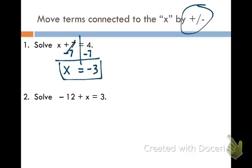If I were to plug negative three back into the original equation right here for x, I would get negative three plus seven equals four. And that's a true statement. Negative three plus seven is four.